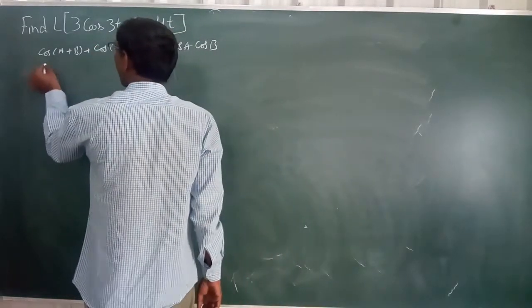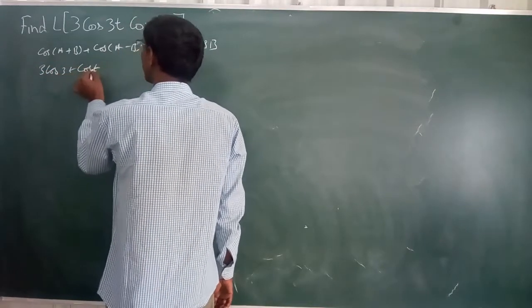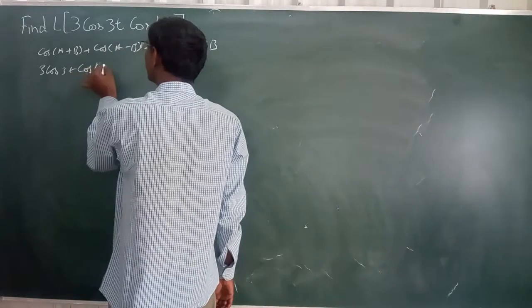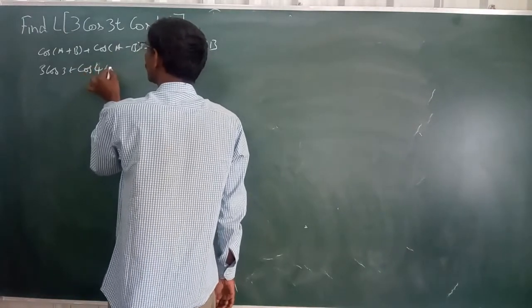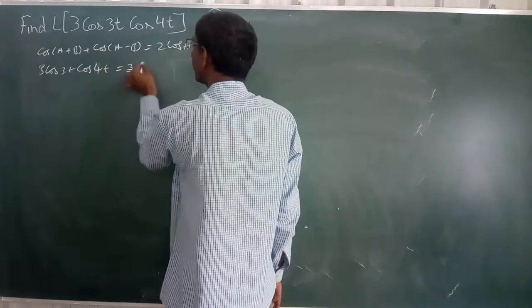Okay, can I take? So, 3 cos 3 theta cos 4 theta. This is given, right? 4 theta. So this is how you would like to write. This is equal to 3 by 2.